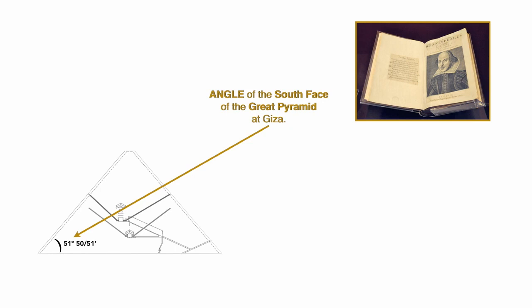It's got over two dozen wrong page numbers, and every single one of them is part of a code. So, for example, it's known that the side slope angle of the Great Pyramid is 51 degrees and just between 50 and 51 minutes.